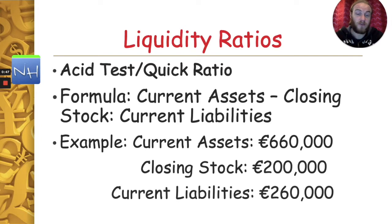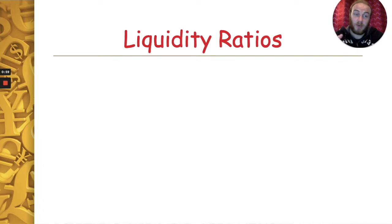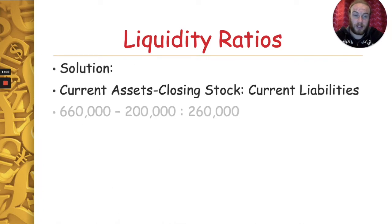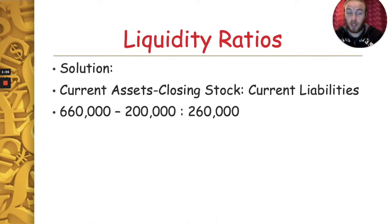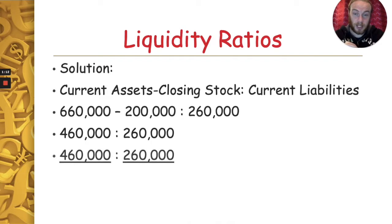In our example question we've got current assets of 660,000, closing stock of 200,000, and current liabilities of 260,000. So what is the acid test ratio? We put those numbers into our formula: 660,000 take away 200,000, all over 260,000. Taking the two numbers away from each other gives us 460,000 over 260,000.